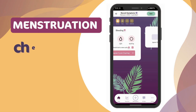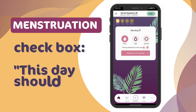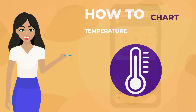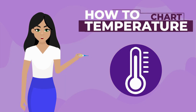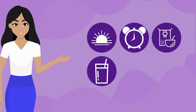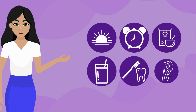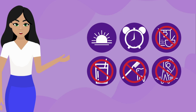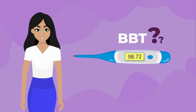If this is the start of your period, check the box that says 'This day should start a new cycle.' Now let's chart your basal body temperature in the Peak Day app. To chart your temperature, make sure you take your temperature at the same time each morning before any activity.